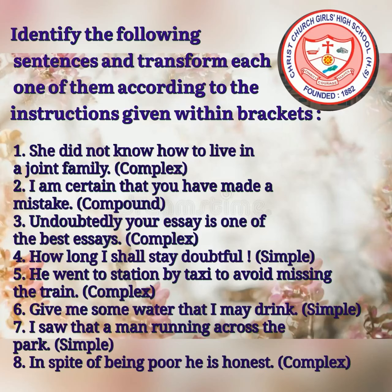Sentence one: 'She did not know how to live in a joint family' — transform into complex. Number two: 'I am certain that you have made a mistake' — transform into a compound sentence. Number three: 'Undoubtedly, your essay is one of the best essays' — transform into a complex sentence. Sentence four: 'How long I shall stay doubtful' — turn into a simple sentence. Number five: 'He went to station by taxi to avoid missing the train' — transform into a complex sentence. Number six: 'Give me some water that I may drink' — turn into a simple sentence.